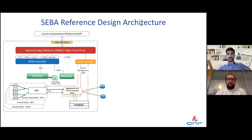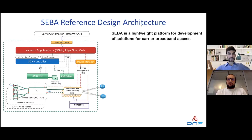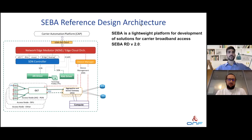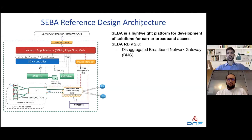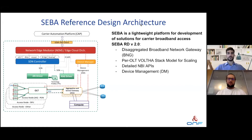As a reminder, ONF has a Software-Enabled Broadband Access reference design which specifies CIBA — a lightweight platform for development of solutions for carrier broadband access. The idea is that we have this end-to-end definition blueprint for several software components that leverage white box hardware for an end-to-end solution that providers can take and deploy for their broadband networks. We recently released the 2.0 version of the reference design, which goes into detail about the broadband network gateway, stack modeling for scaling, northbound APIs of VOLTHA, and device management.